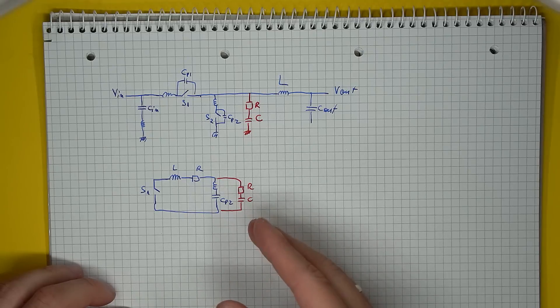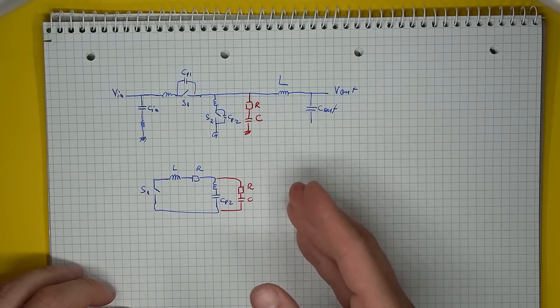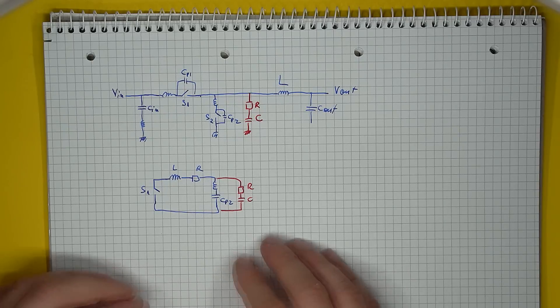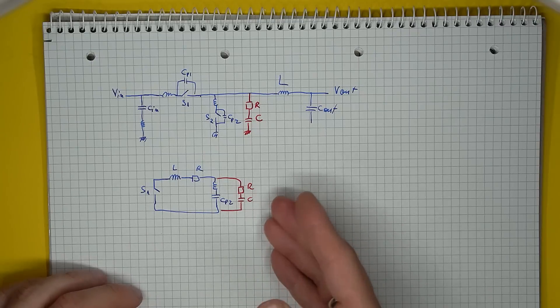But the benefit is that it will dampen the oscillation and reduce its amplitude. So it's a compromised bit of circuitry. Therefore you should only add it when it's actually needed.